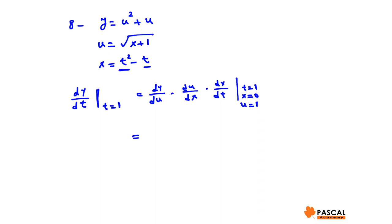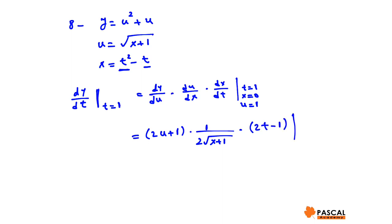dy du equals 2u plus 1; du dx equals 1 over 2 root x plus 1; and dx dt equals 2t minus 1. With t equals 1, x equals 0, and u equals 1, dy dt equals 3 times 1 over 2 times 1, which is 3 over 2. Thanks for watching.